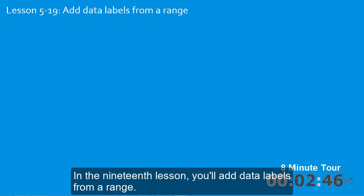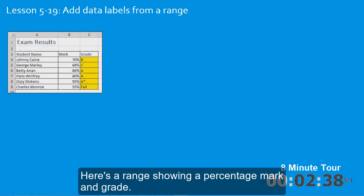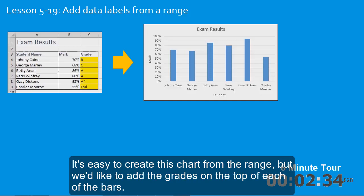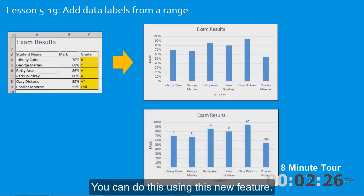In the nineteenth lesson you'll add data labels from a range. This is another brand new Excel 2013 feature. Here's a range showing a percentage mark and grade. It's easy to create this chart from the range, but we'd like to add the grades on the top of each of the bars. You can do this using this new feature, and you'll learn how in this lesson.